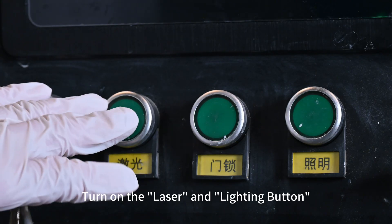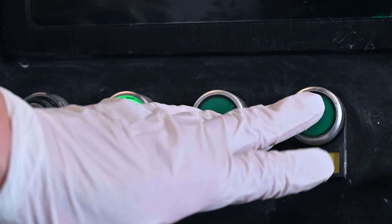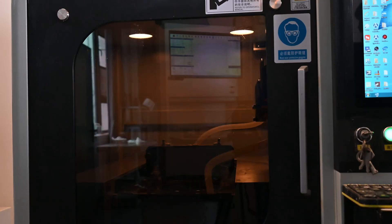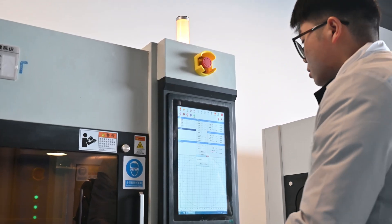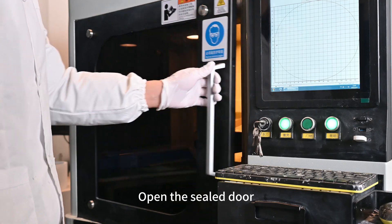Turn on the laser and lighting button. Open the 3D printing control software. Open the sealed door.